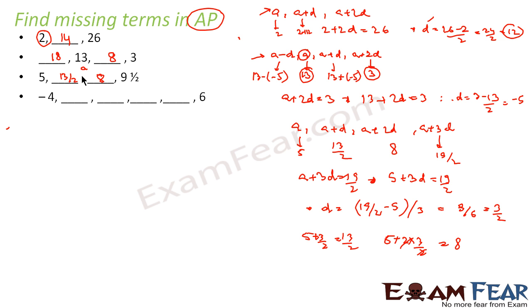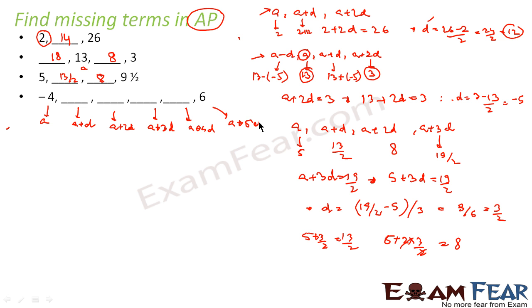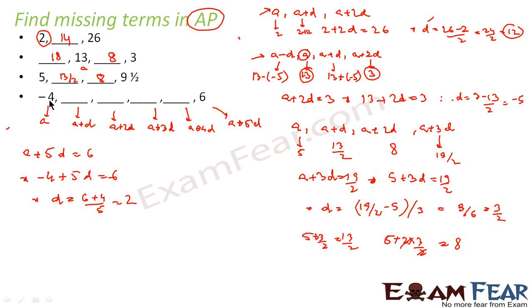Let's take one more example: minus 4, _, _, _, _, 6. We assume the first term as A, so the terms are A, A plus D, A plus 2D, A plus 3D, A plus 4D, and A plus 5D. We are told A equals minus 4 and A plus 5D equals 6, so minus 4 plus 5D equals 6, giving D equals (6 plus 4) by 5, which is 2.